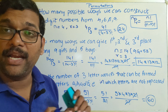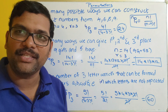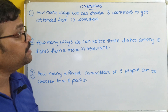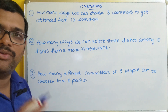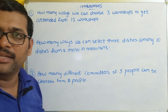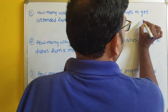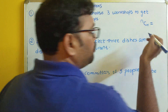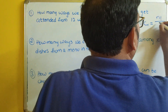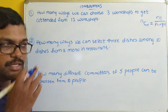Now we will move on to combinations. In combination problems we need to select or choose objects, but we are not arranging them. The formula is nCr, where we choose r objects from n objects, formulated as n factorial divided by (n minus r) factorial into r factorial. This is the formula for combinations.